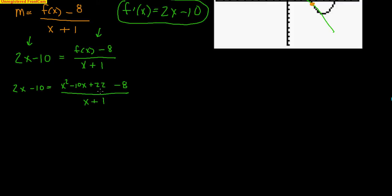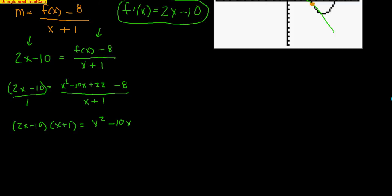Now I just solve this equation. I cross-multiply: (2x - 10)(x + 1) = x² - 10x + 14. Multiplying out the left side gives 2x² + 2x - 10x - 10, which simplifies to 2x² - 8x - 10 = x² - 10x + 14.